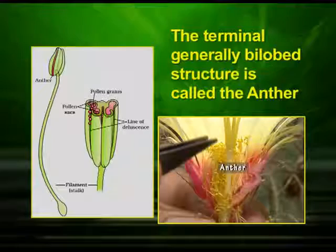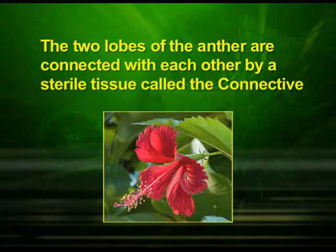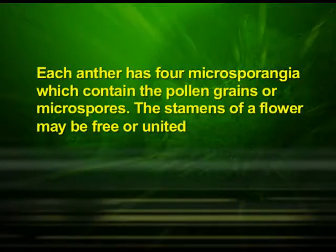Now we will discuss the male reproductive structure of a flower. Generally the androecium is the third inner whorl of a flower. It is composed of stamens. Each stamen consists of a long and slender stalk called filament, and the terminal generally bilobed structure is called the anther. Male gametes are produced in the pollen grains. The pollen grains develop in the anthers of the flower. The two lobes of the anther are connected with each other by a sterile tissue called the connective.